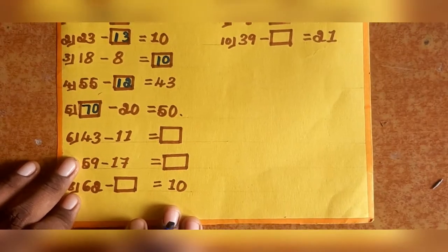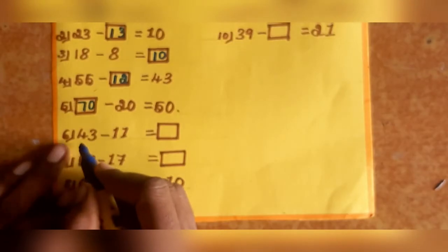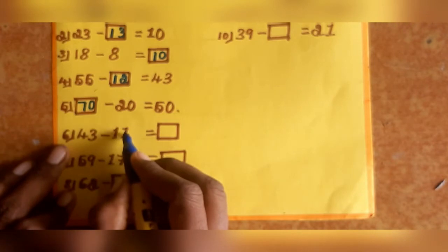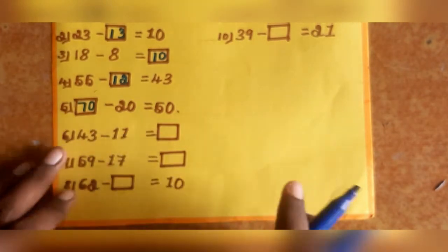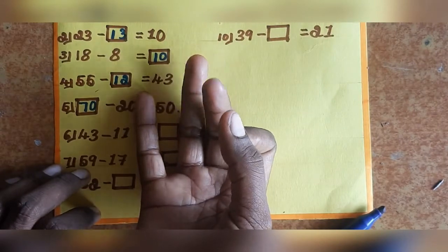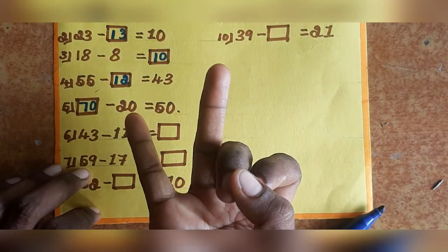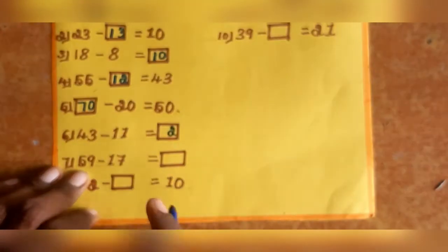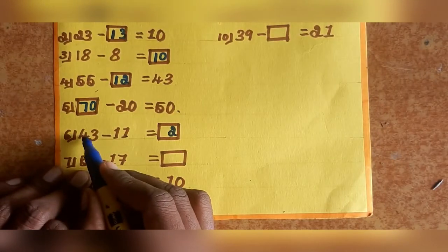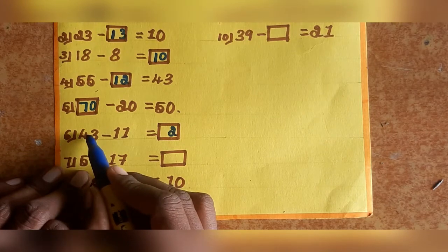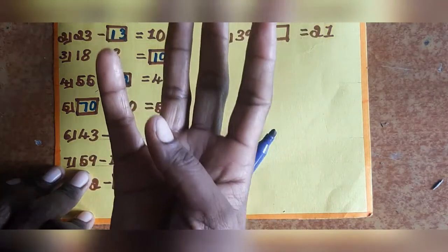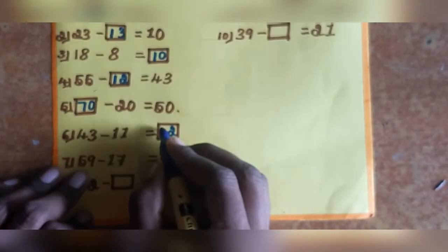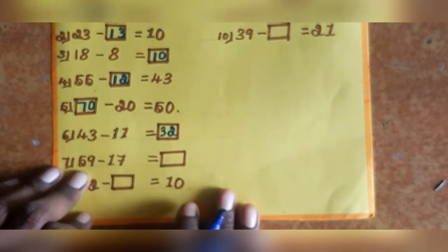Next, sixth one: 43 minus 11. First less units: 3 minus 1, balance is 2. Next, less tens: 4 minus 1, balance is 3.